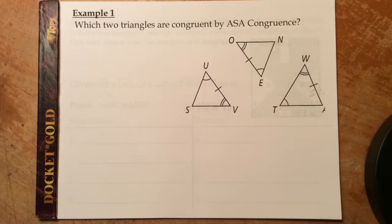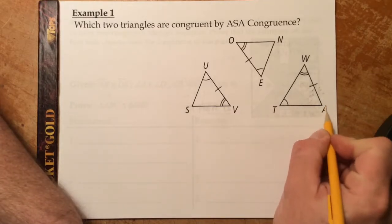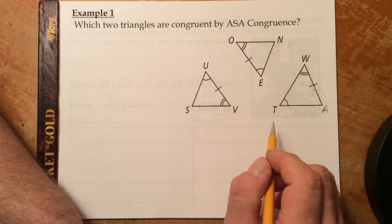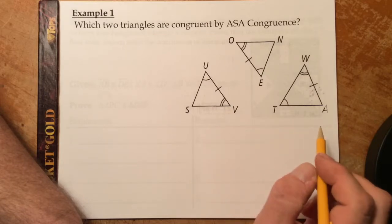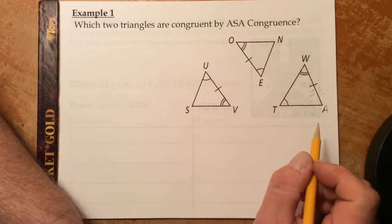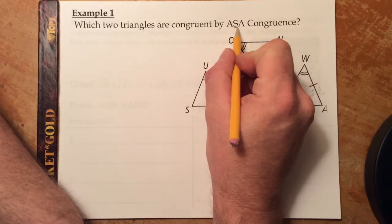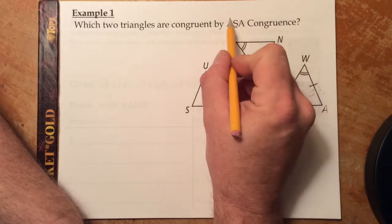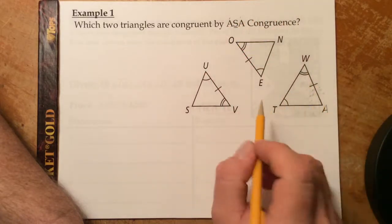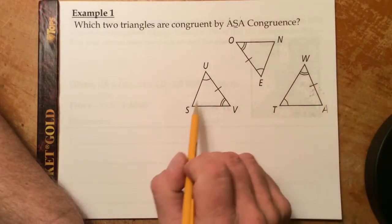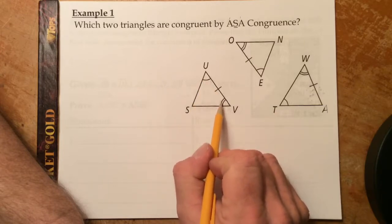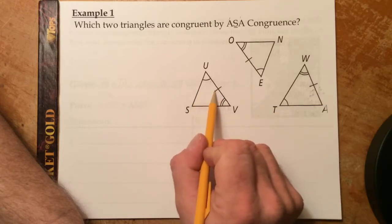Example 1: Which two triangles are congruent by the angle-side-angle congruence postulate? We have three triangles — triangle USV, triangle EON, and triangle TWA. We need to determine which two we can apply the ASA congruence postulate to. Notice that in ASA, the side is included between the two angles. Triangle USV has two angles marked with an included side marked.